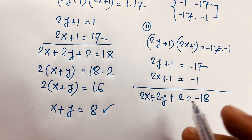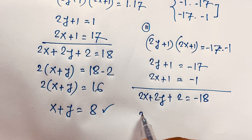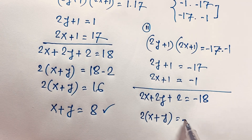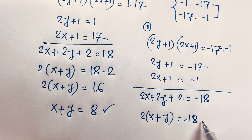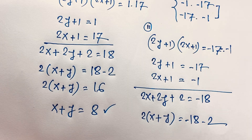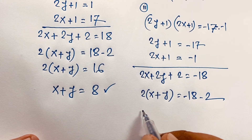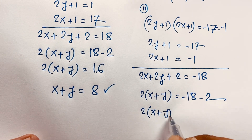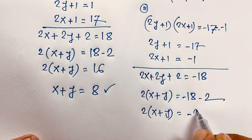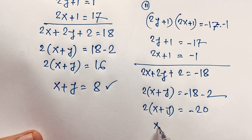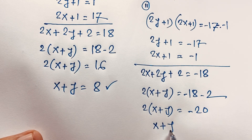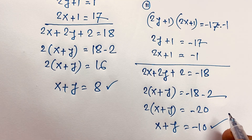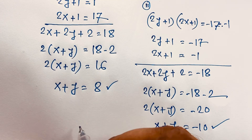Then at this moment, you can see easily 2 is common, so x plus y is equal to minus 18 minus 2. Here, 2 times (x plus y) is equal to minus 20. Then if I divide both sides by 2, we will find out x plus y is equal to minus 10. But remember that x and y are positive integers.